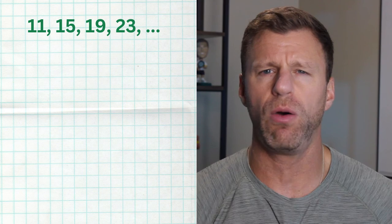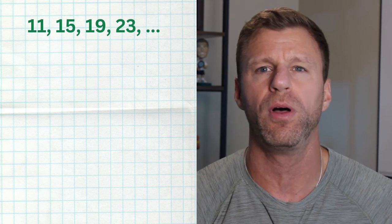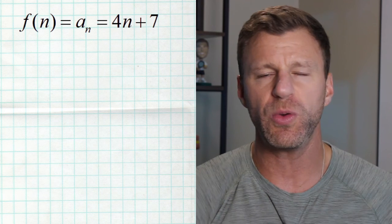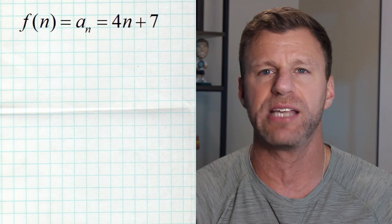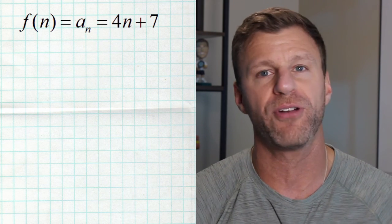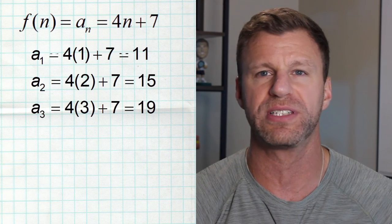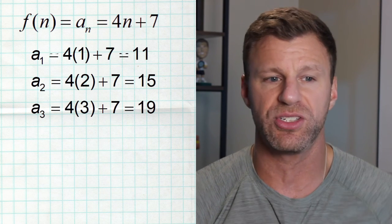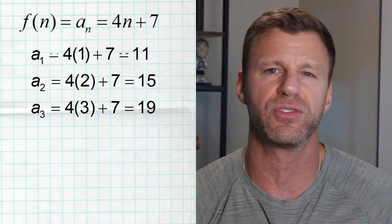Let's look at a couple of examples. Imagine the sequence 11, 15, 19 — you can see the pattern: we're going up four each time. But what function would generate that sequence? It's 4n plus 7. Using function notation f(n) or sequence notation a sub n, we plug in one to get the first term of 11, two to get 15, three to get 19. So as a sequence this is just the list of numbers 11, 15, 19 — the first, second, and third terms — going on forever.